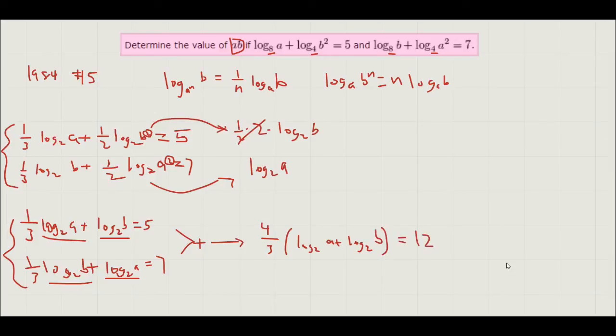Now we can get rid of this 4 thirds by multiplying by 3 divided by 4. So 12 times 3 divided by 4 is simply 9.